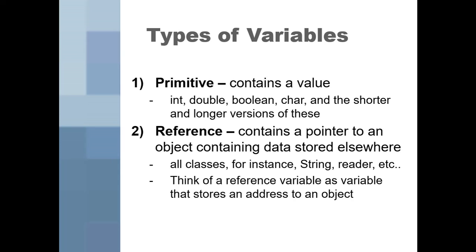A reference variable is like string or reader. References have a pointer to an object where the data is stored elsewhere. So a reference variable is just a variable that stores an address to an object. What you guys are going to be making a lot of now is a reference variable when you make a brand new object.